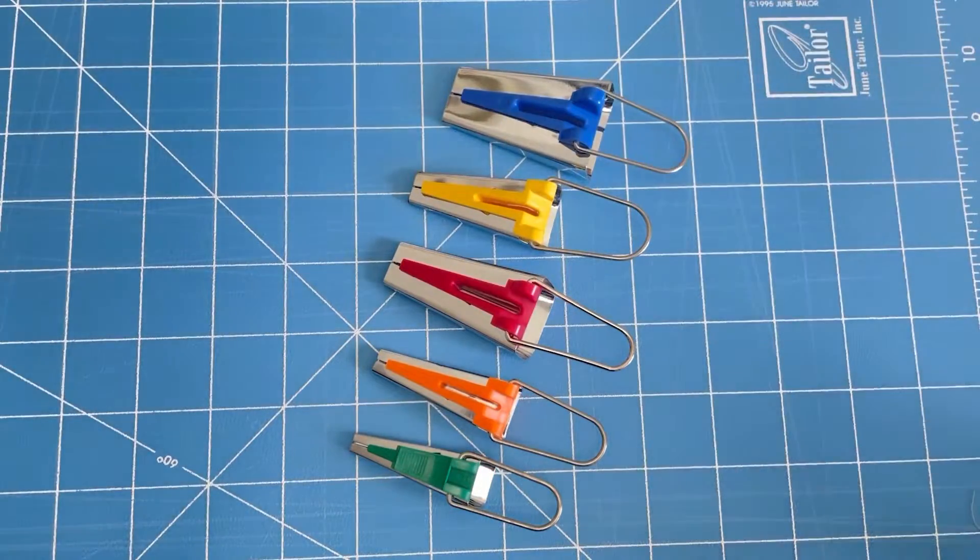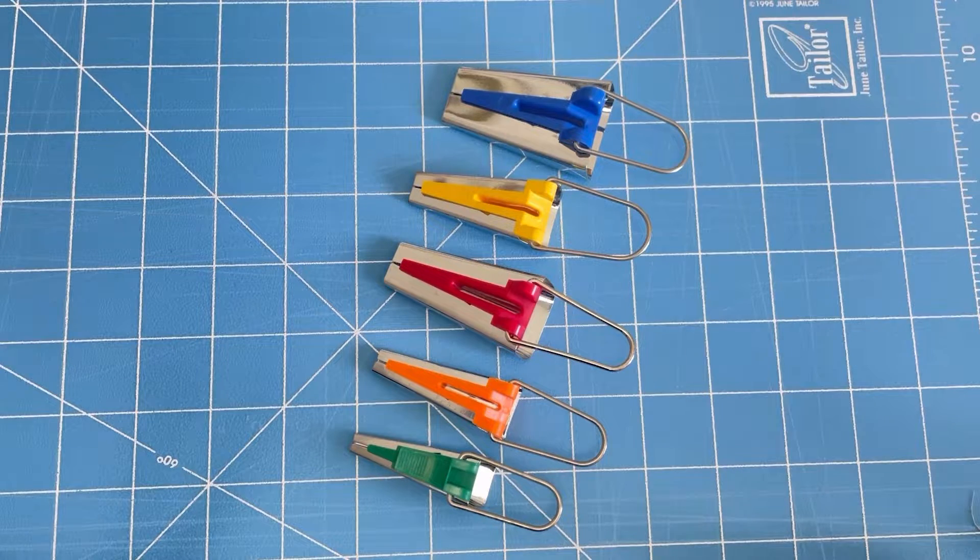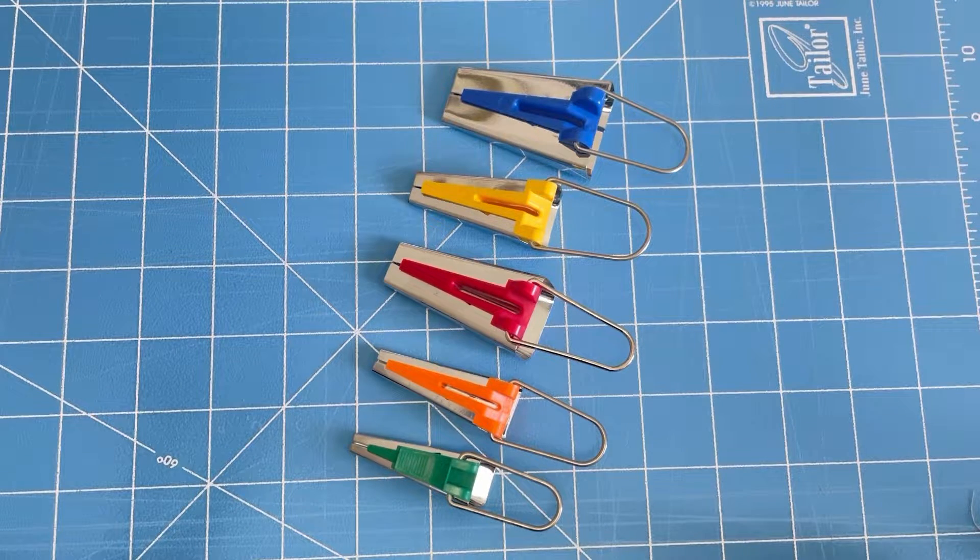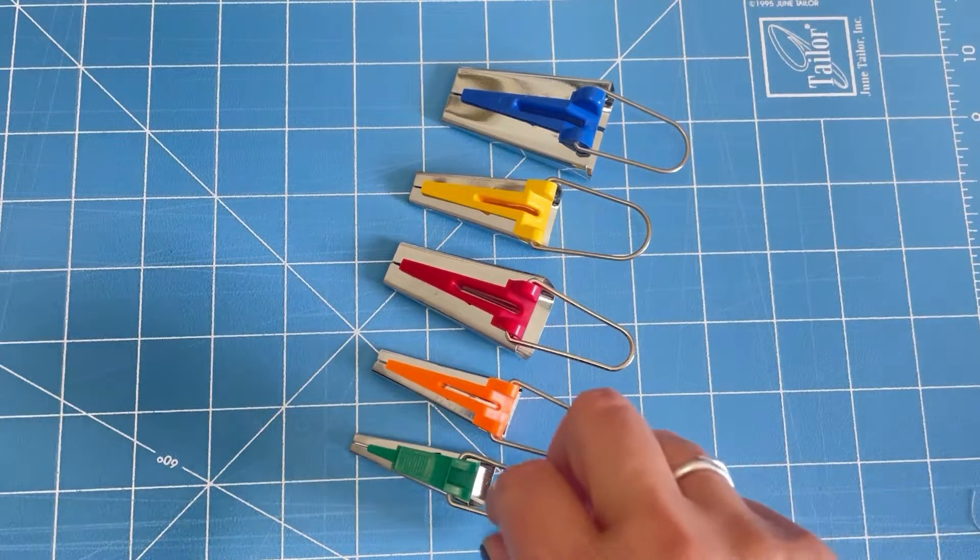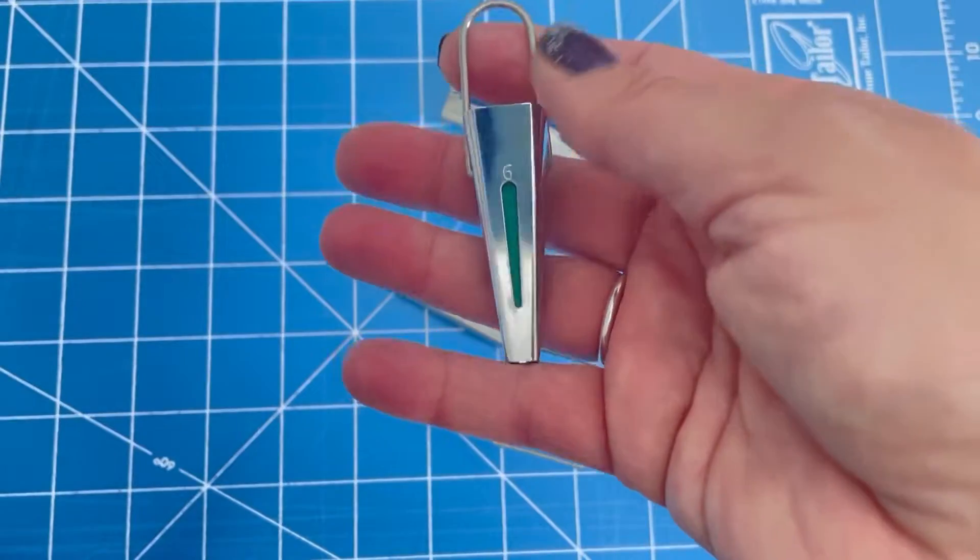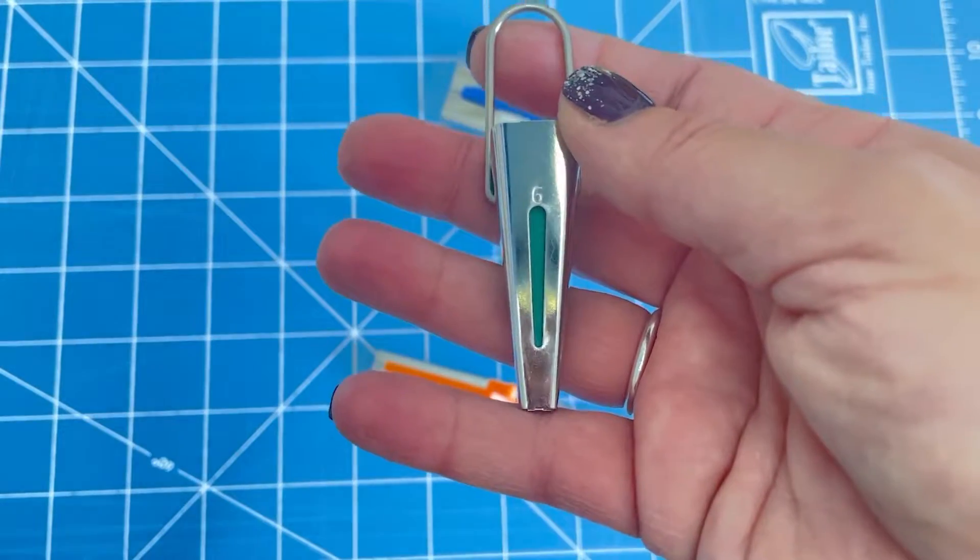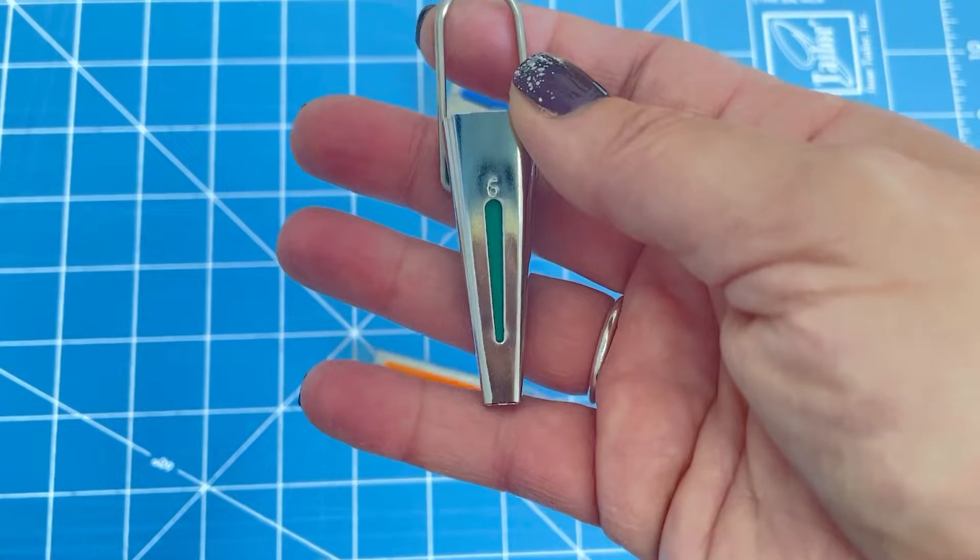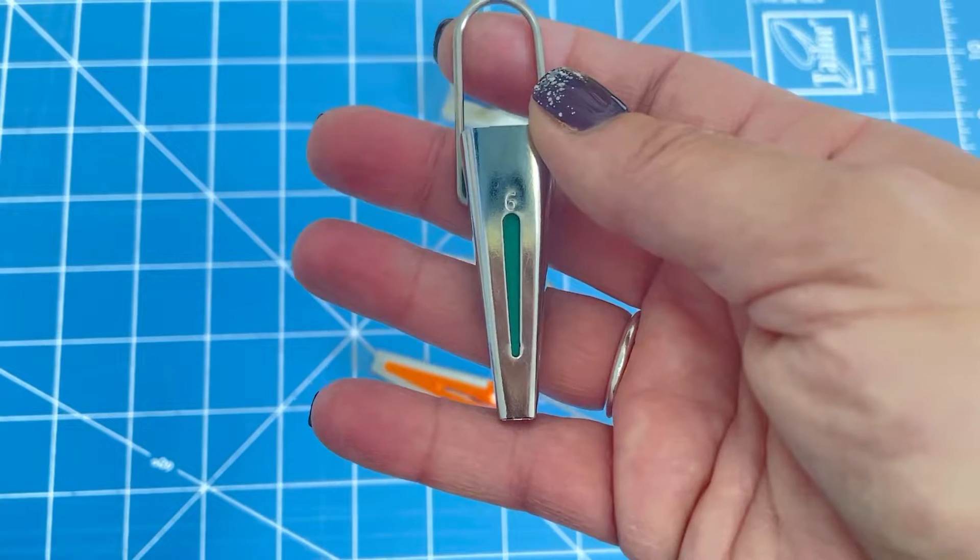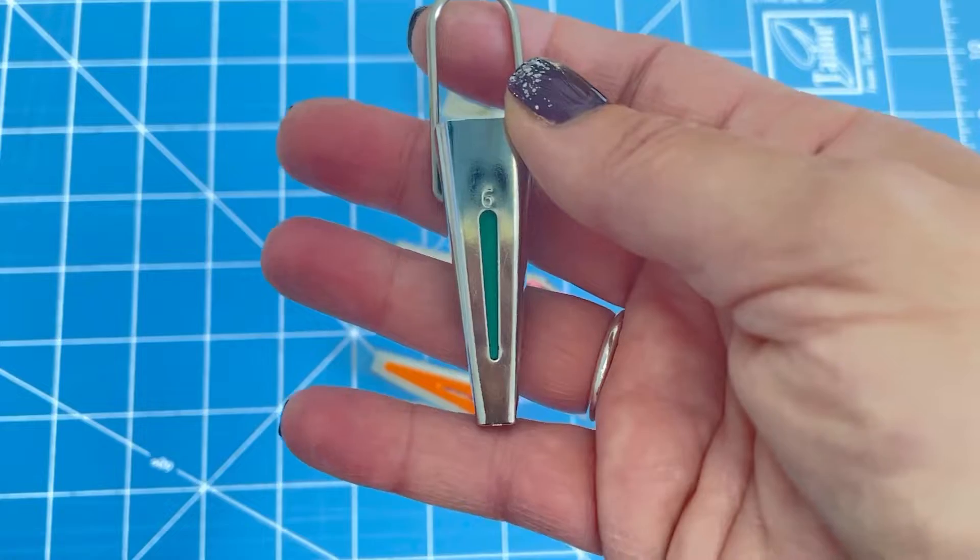So I thought, well, what are these numbers? What they are is, this number six, the one that I needed, is actually millimetres. So that will make a six millimetre bias binding tape.